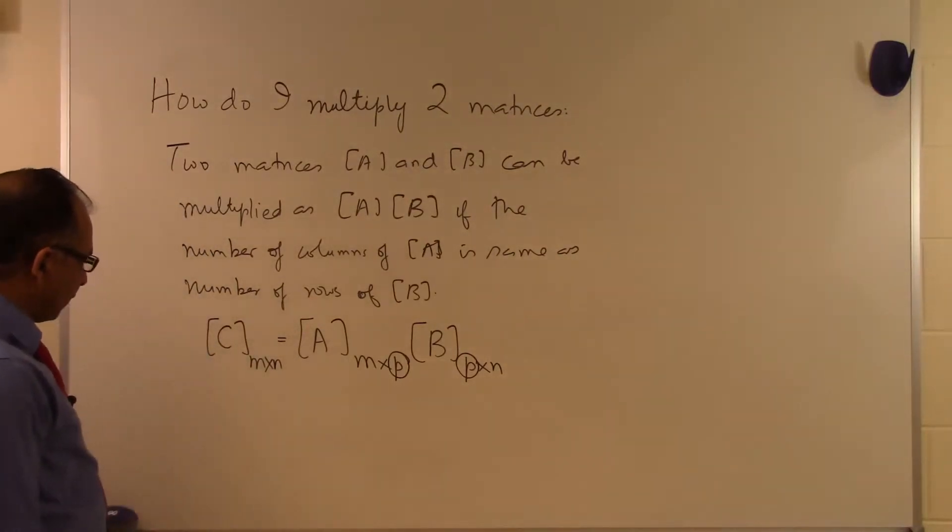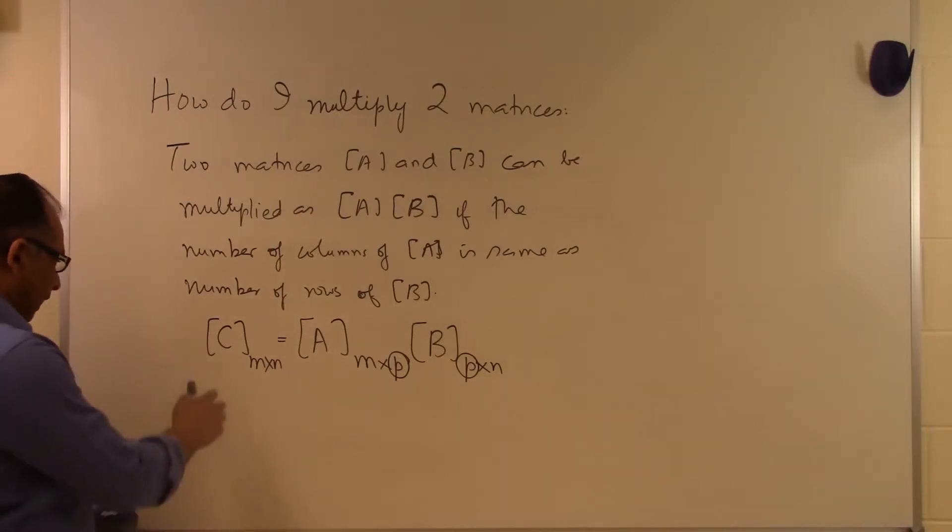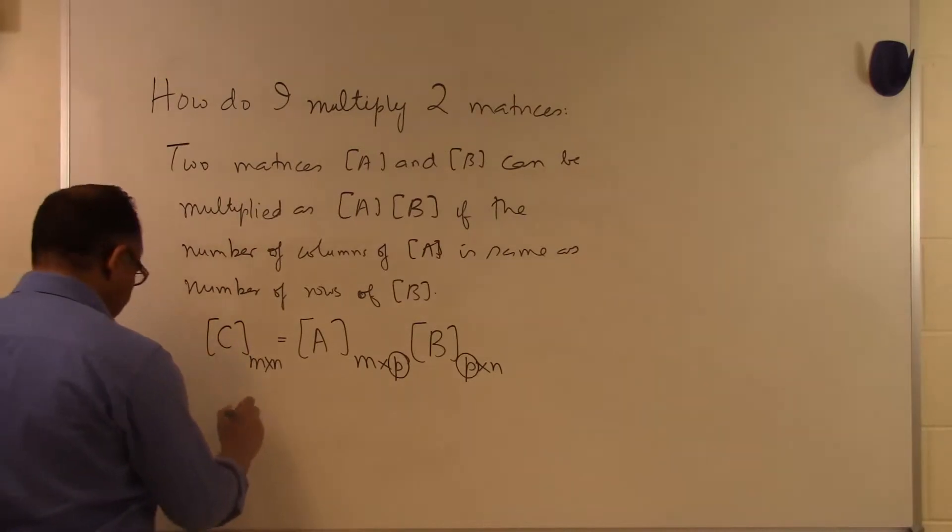That's how we can determine whether matrix multiplication is allowed. Now, how do we find individual elements of the C matrix? It's given by a summation.